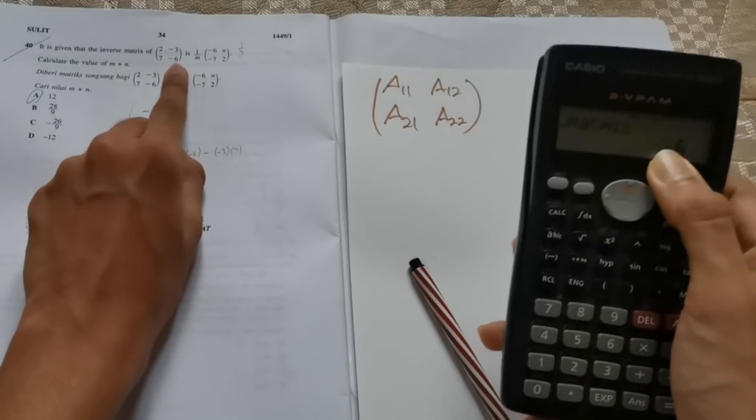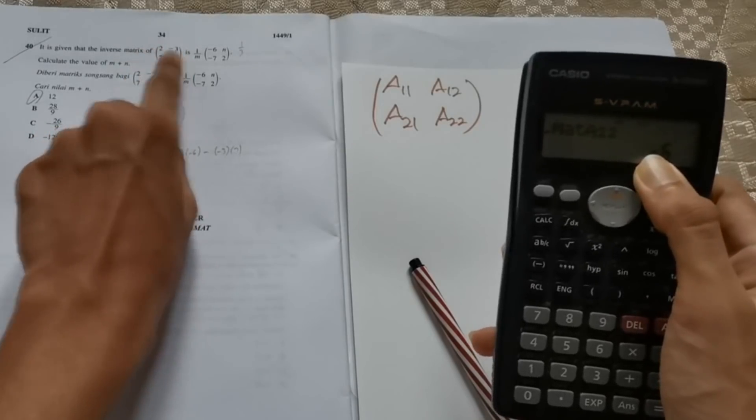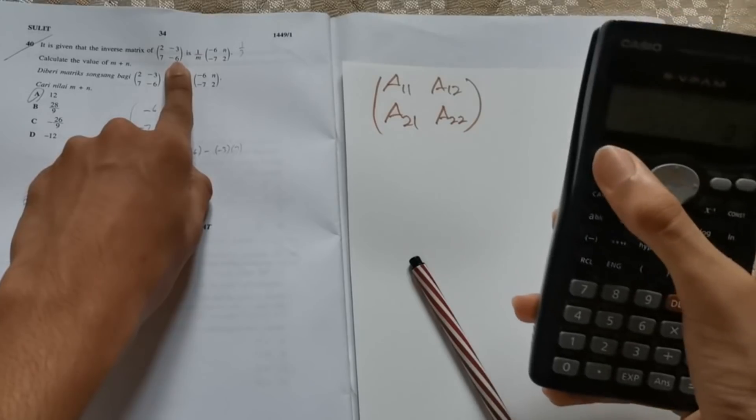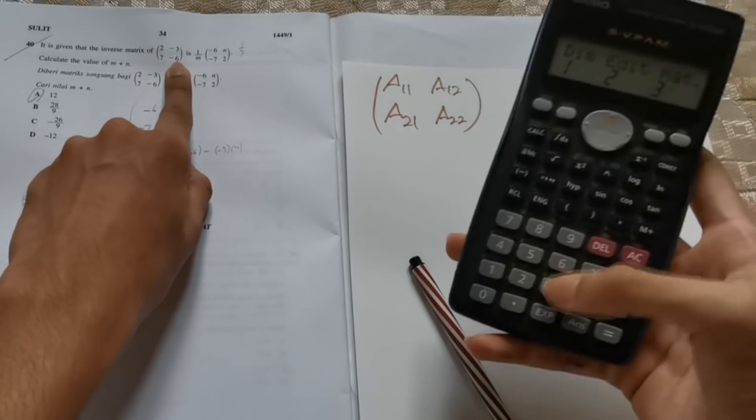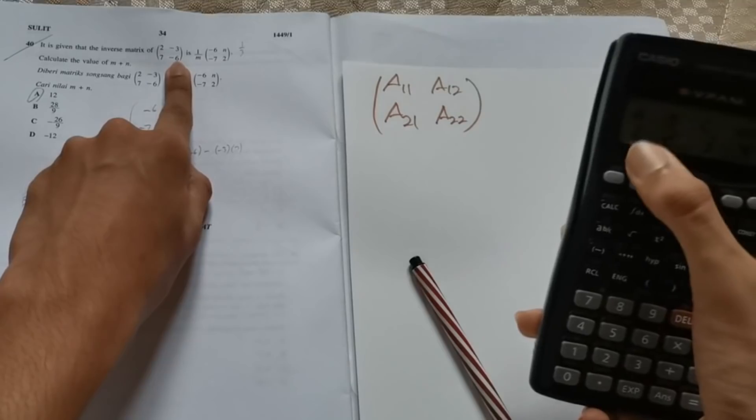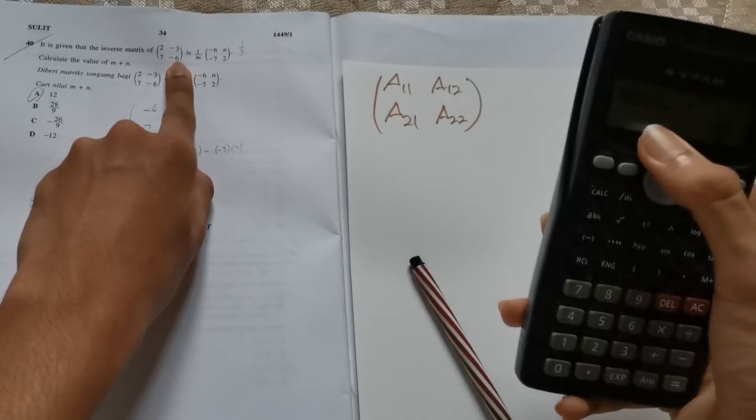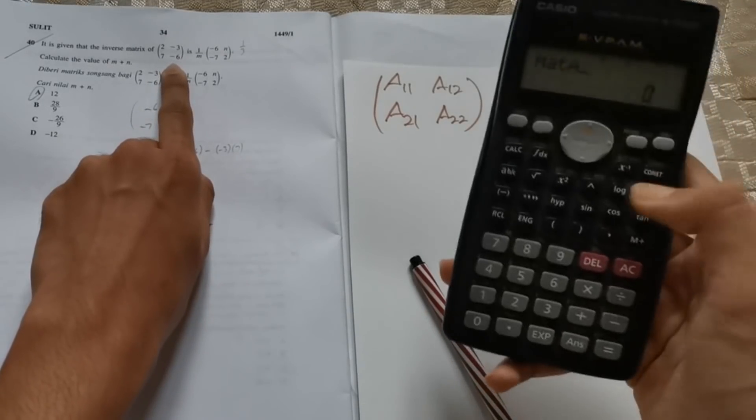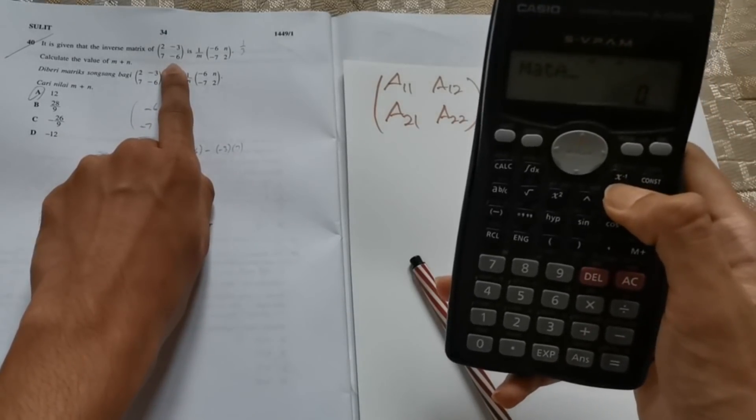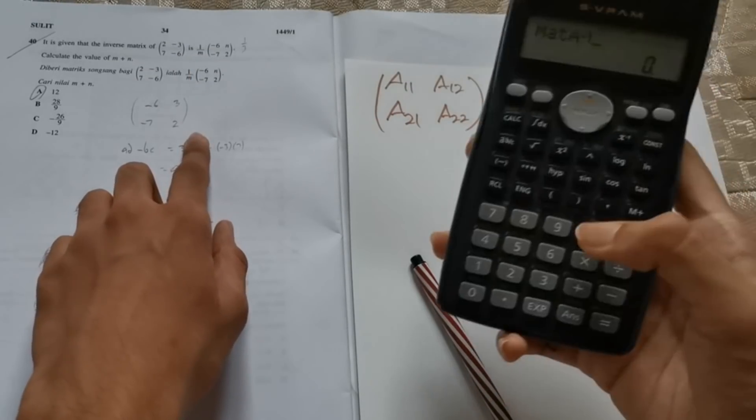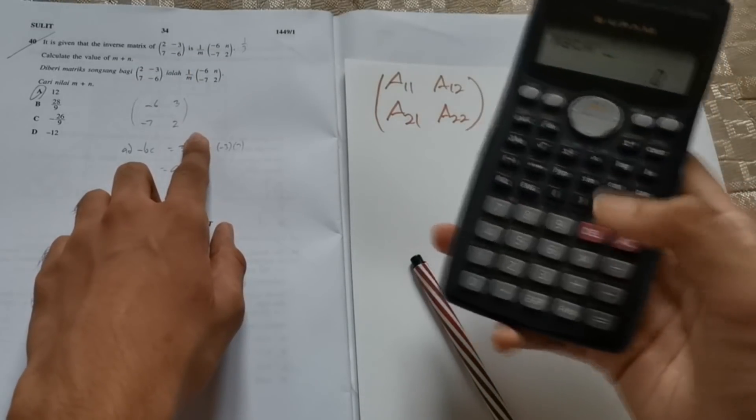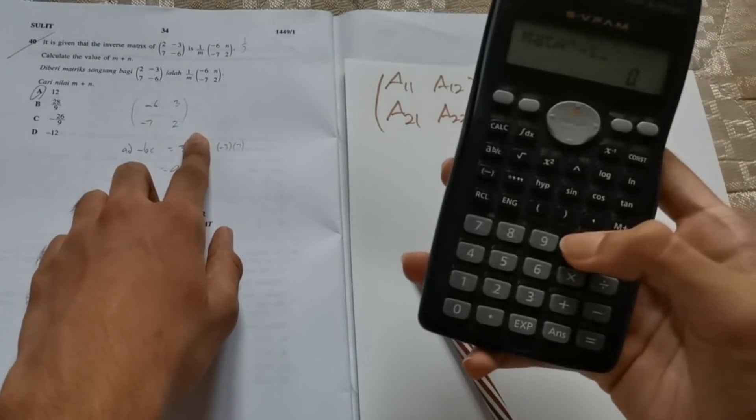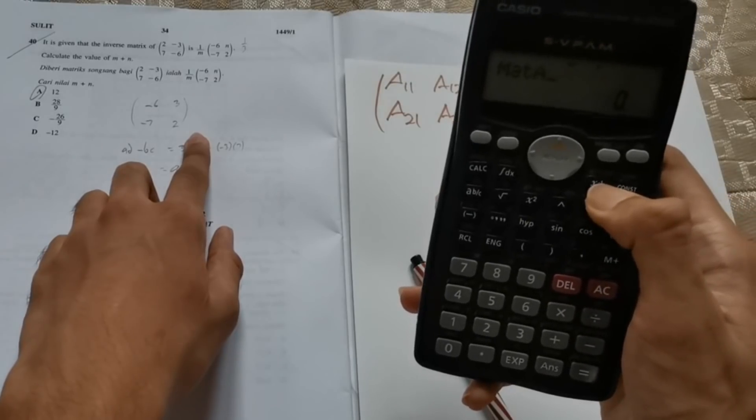When it asks for A12, you need to press negative 3. And then when it asks for A21, you need to press 7. And then when it asks for A22, you need to press negative 6. Now you have defined your matrix. After you've done that, I want you to press on to clear everything. And then press shift 4 again. This time, I want you to press 3 to choose a matrix.